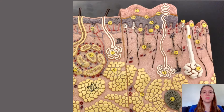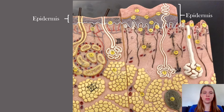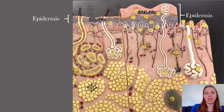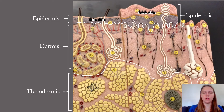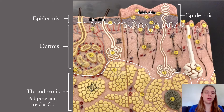The skin is made up of two layers: the epidermis, which can be either thick or thin. Thick skin is found on the palms of the hands and soles of the feet, while thin skin is found everywhere else. Below the epidermis is the dermis. Beneath that is a region that's not part of the skin called the hypodermis, which is mostly composed of adipose tissue and areolar connective tissue.